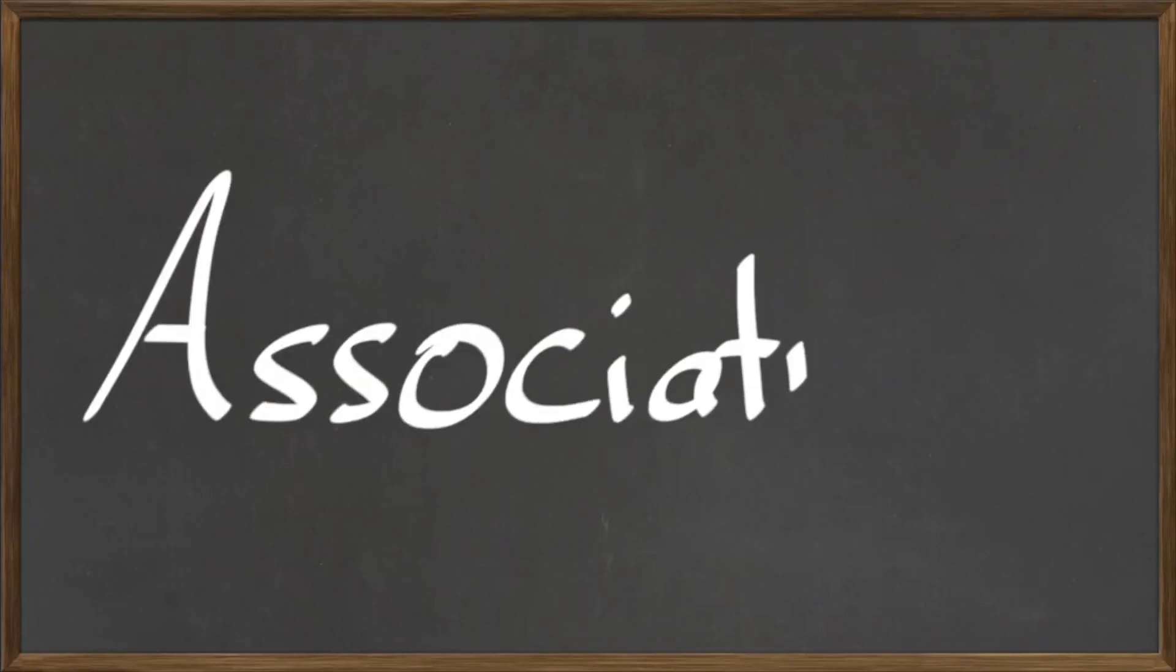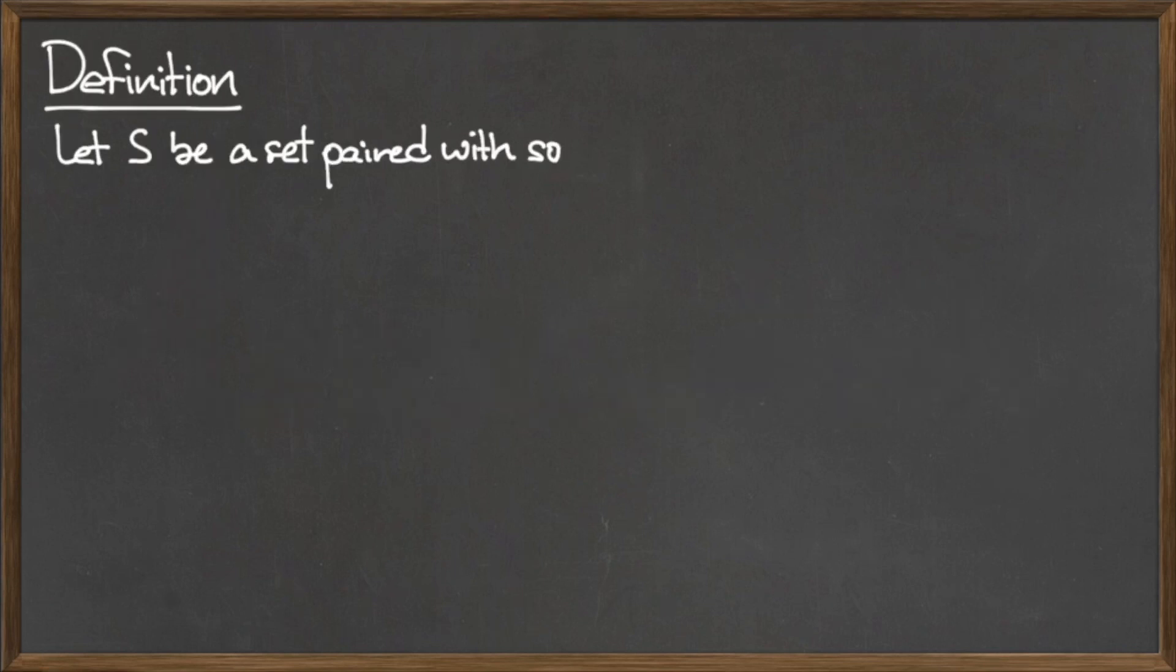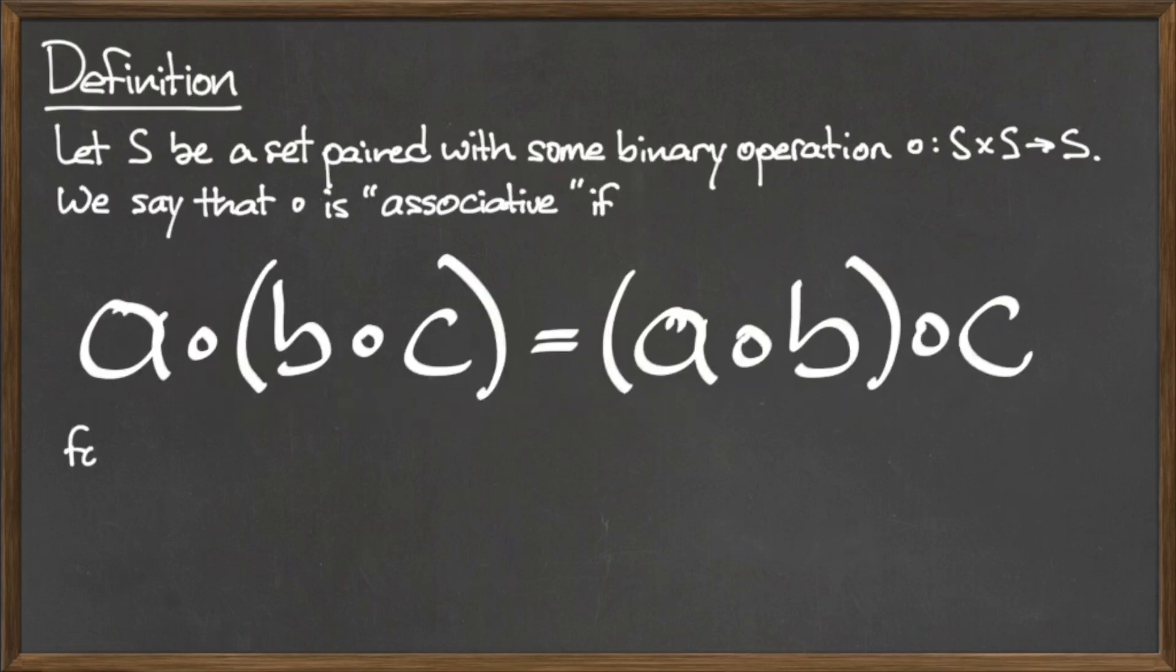In this video we will discuss associativity as it relates to binary operations. Let S be a set paired with some binary operation dot from S cross S to S.